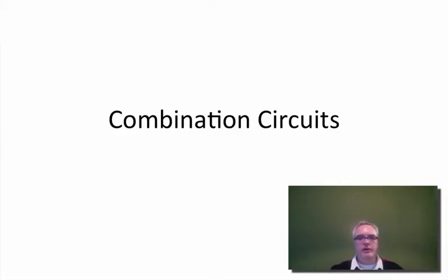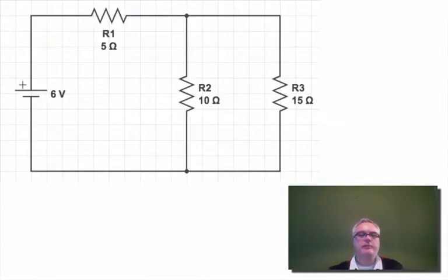In this video we're going to talk about combination circuits. A combination circuit is really just a circuit that is a combination of both a series and a parallel circuit. As you can see we have our battery connected in series with resistor 1 which is then connected in parallel with two other resistors.